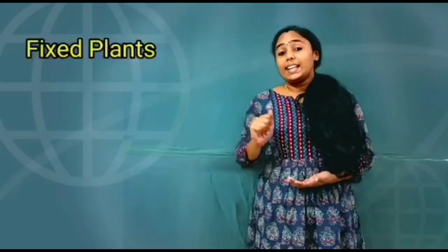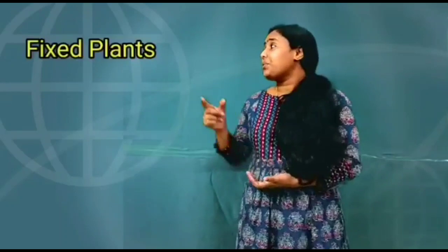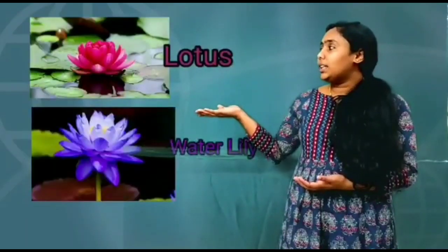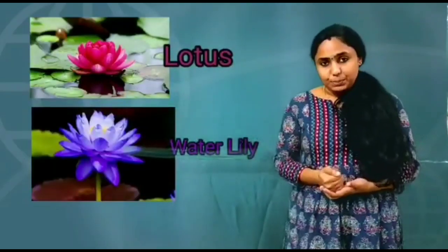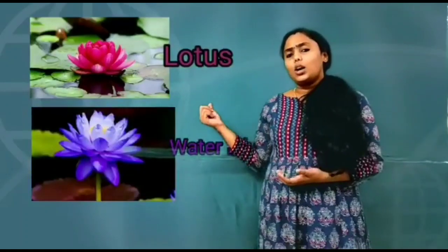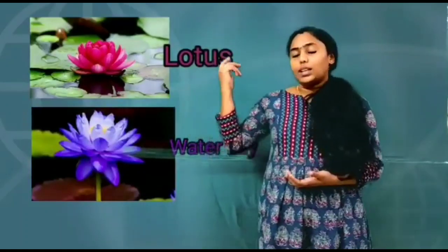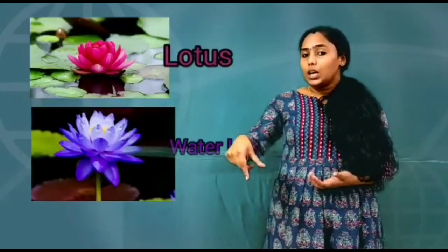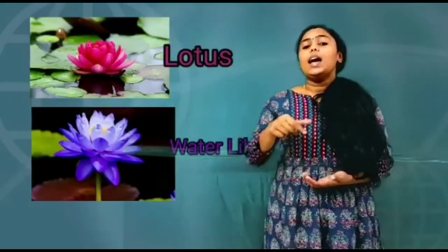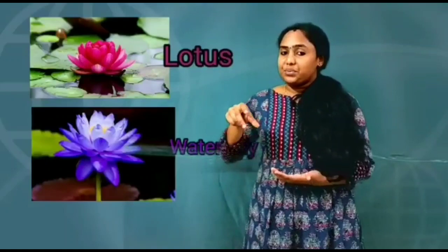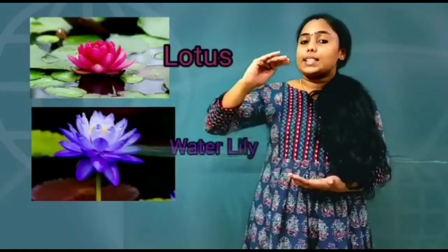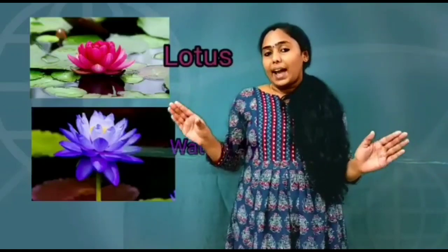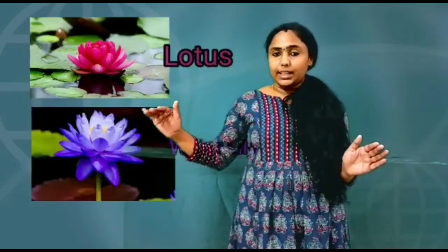The next aquatic plant type is fixed plants. Lotus and water lily are examples of fixed plants. If you see the lotus and water lily, you can see the roots go deep into the water and get fixed there. The flowers and the broad, flat leaves appear on top of the water.